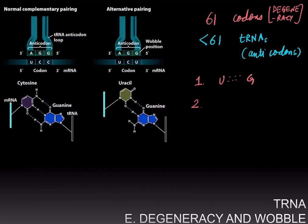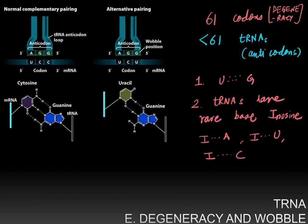And there's a second factor that allows fewer than 61 tRNAs or fewer than 61 anticodons to recognize 61 codons, and that is that tRNAs have a rare base called inosine. And inosine can base pair with adenine, with uracil, and with cytosine. And once again, this happens in the wobble position, which is at the 5' end of the anticodon or 3' end of the codon.